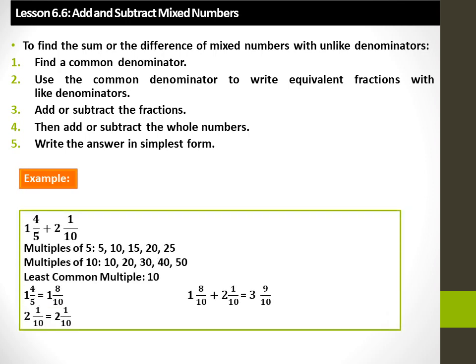Example: 1 4 over 5 plus 2 1 over 10. A common multiple of 5 and 10 is 10. 1 4 over 5 is equal to 1 8 over 10. 2 1 over 10 remains the same. 1 8 over 10 plus 2 1 over 10 is equal to 3 9 over 10.